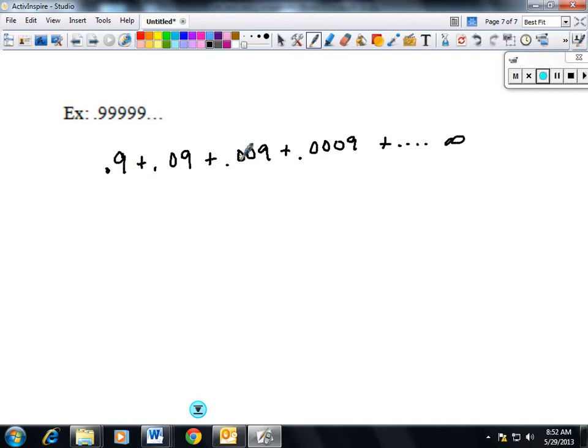This is just a geometric series where my r is 0.1, or you could say 1/10. So you could rewrite this thing as 9 times the sum of (0.1)^n from 1 to infinity.